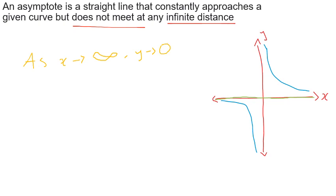With our top right graph, we say that y approaches zero from the positive side because the values of x are positive. However, for our hyperbola in the bottom left corner, as x approaches infinity, y approaches zero from the negative side because the values of x are negative.